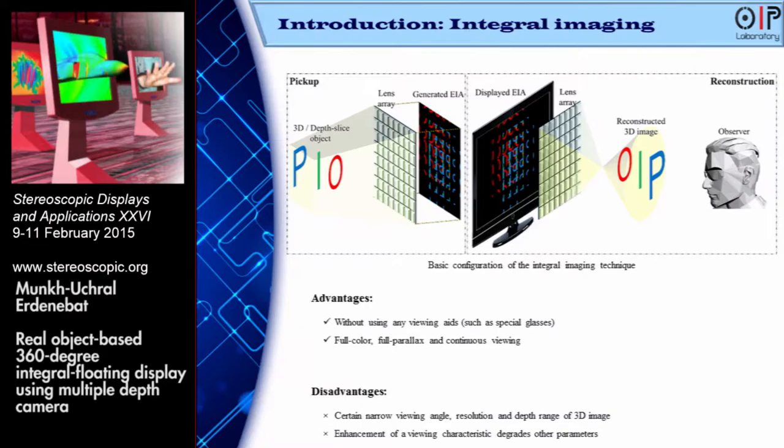As you know, integral imaging is the most distinguished three-dimensional display system, which can display full colour, full parallax, and continuous viewing auto-stereoscopic three-dimensional images from a real three-dimensional or depth slice object. But the display image is provided with limited viewing angle, image resolution, and depth range.